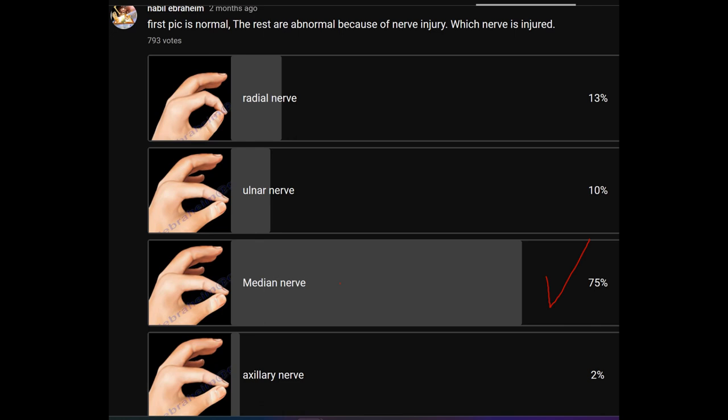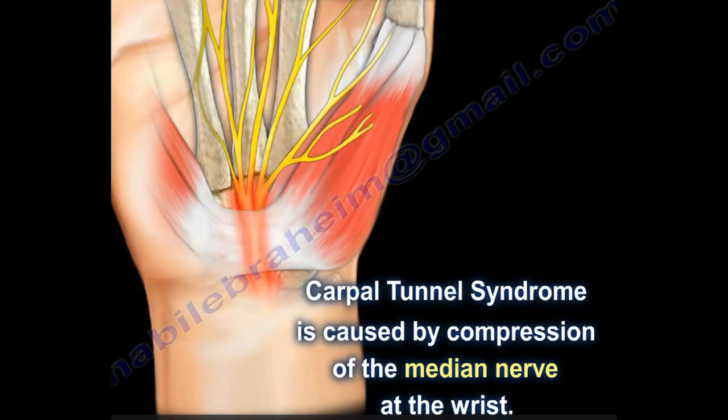How about inability to do the OK sign? It means the anterior interosseous nerve or the median nerve in the forearm is injured.